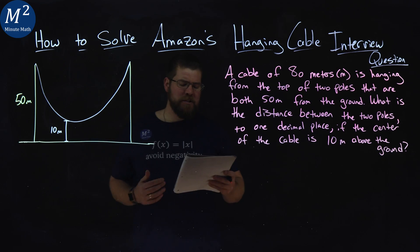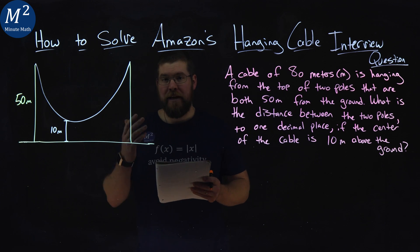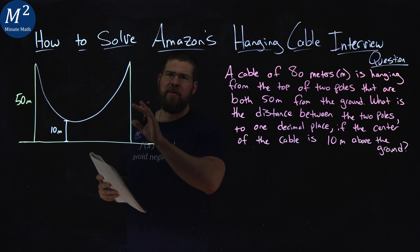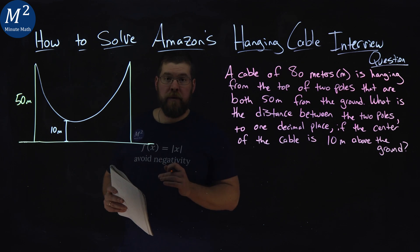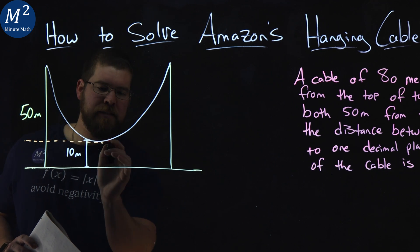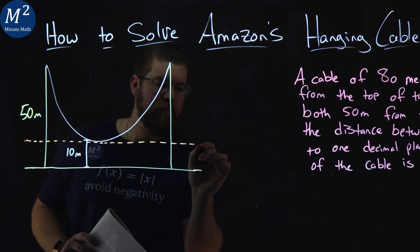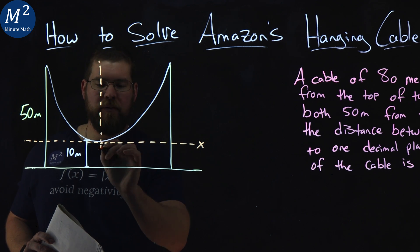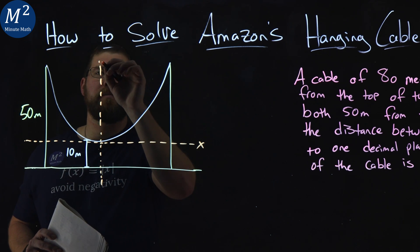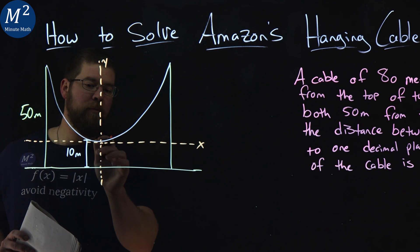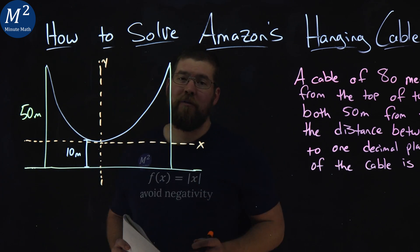So what we're going to do is we're going to need some formula to help us out. And to get that formula or to use it, let's rewrite this image a little bit. Let's make this into a coordinate plane. I'm going to make right here the x-axis and this is my y-axis right here. I'm going to split this exactly in half right there. But notice I'm going to raise up the x-axis 10 meters to be right there at the cusp of the cable.